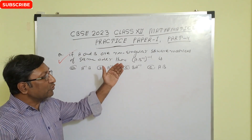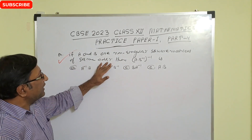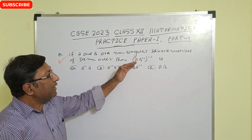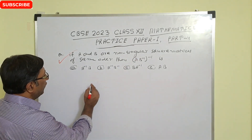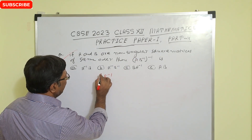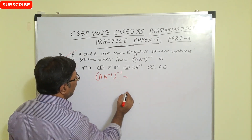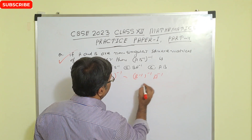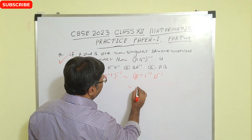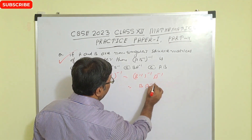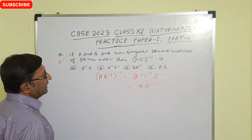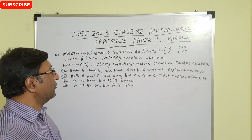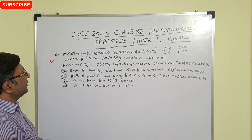Next question: if A and B are non-singular square matrices of the same order, then (AB)^(-1) whole inverse equals what? We know [(AB)^(-1)]^(-1) = (B^(-1))^(-1) × A^(-1) inverse, which gives B × A. So BA is the correct answer, option C.